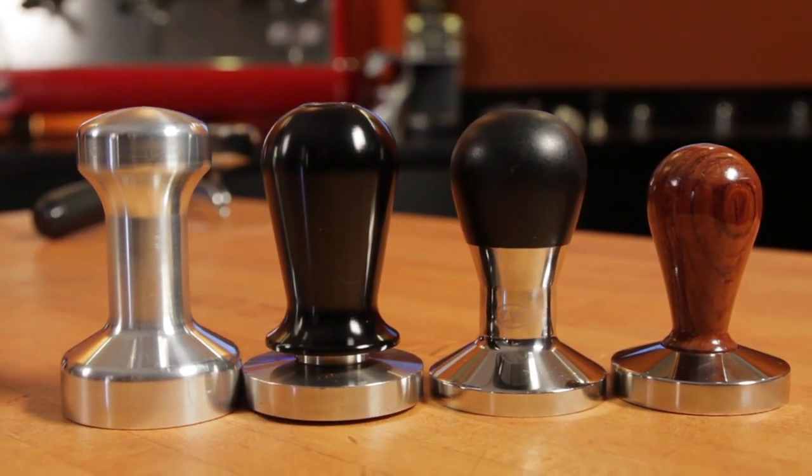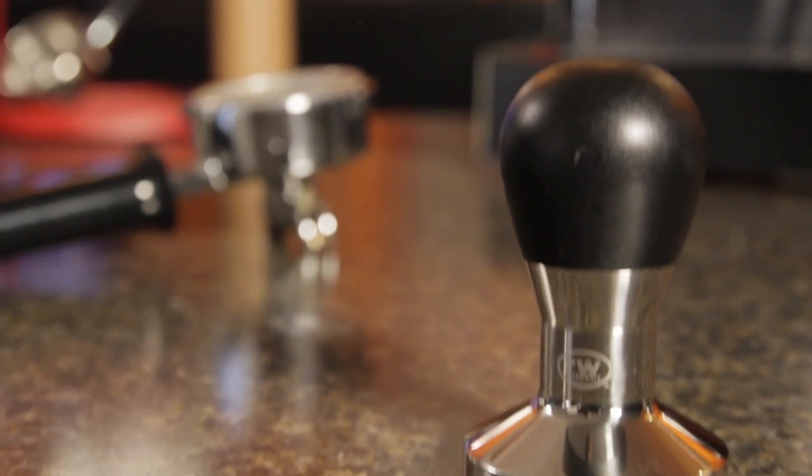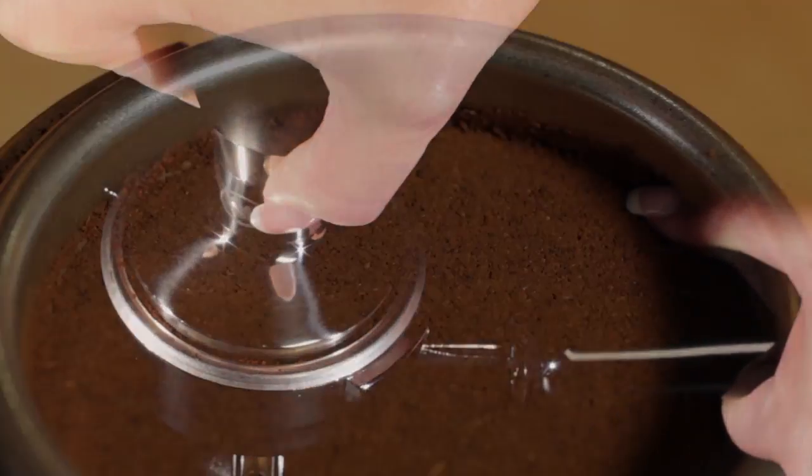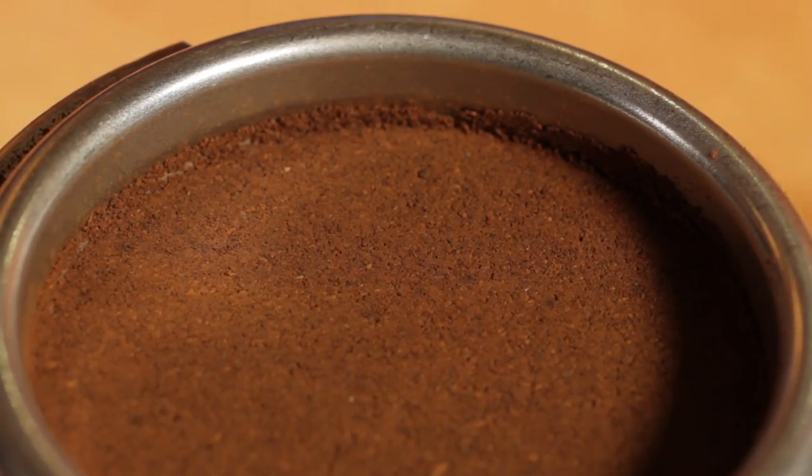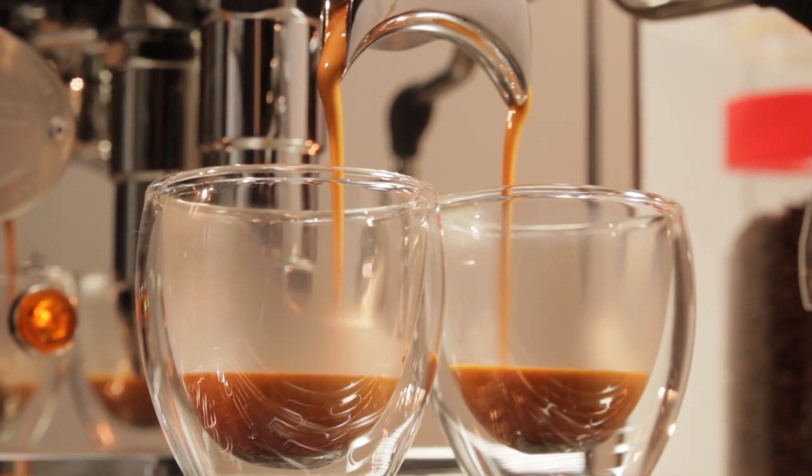Last but not least, we've got tampers. We do have a wide selection available, but one of our favorites is this Rattleware with a large round handle. That large handle end gives a good feel in the palm and more area to apply force when tamping. A good tamp helps to create a nice, even coffee puck with less risk of water channeling for more even extractions.